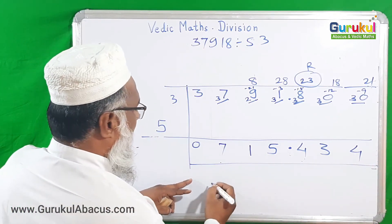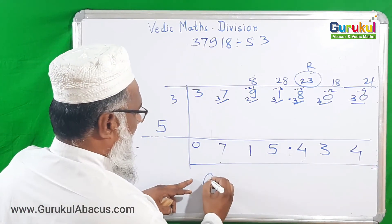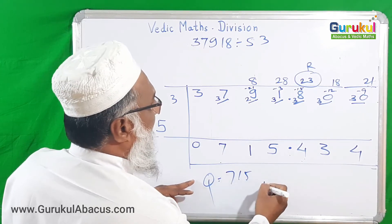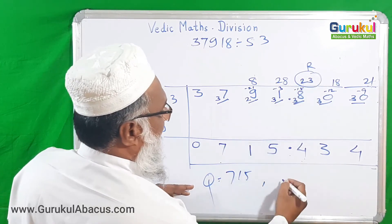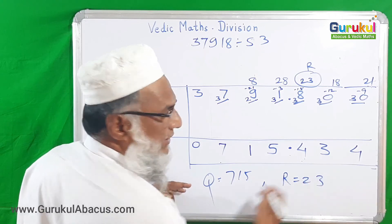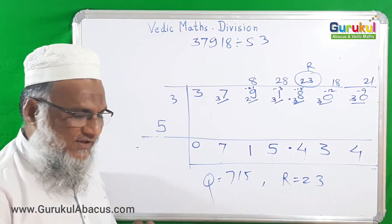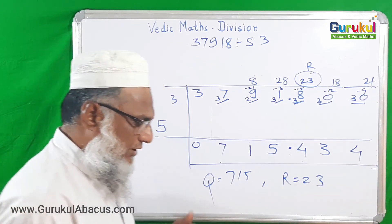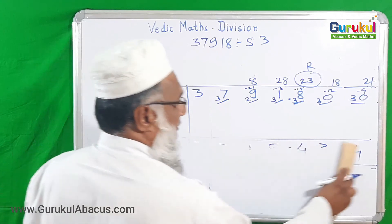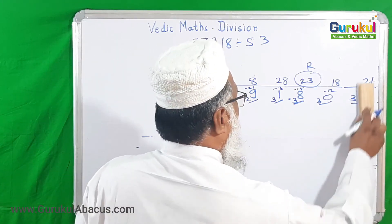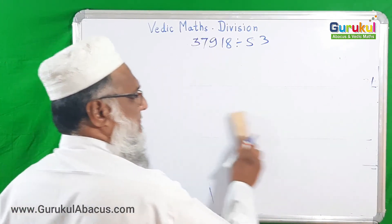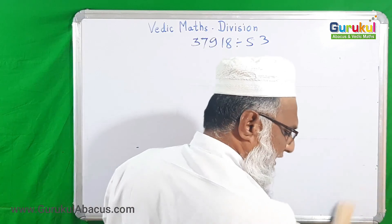If you require the answer in remainder mode, the quotient is 715 and the remainder is 23. This gives more and more clarity. Sometimes the divisor can be a 3-digit number — we will cover that as well.